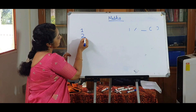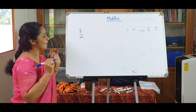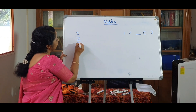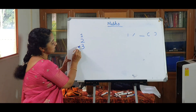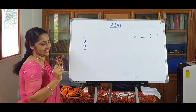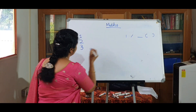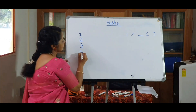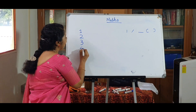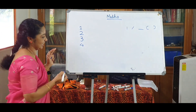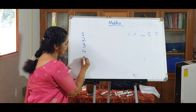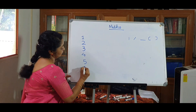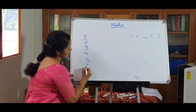Okay, next number two. For writing two, we will choose this curve, like this, and a sleeping line. Okay, two is ready. Then we can write three — here we are using two curves. And for writing four: first we will write one oblique line and a sleeping line and a standing line.